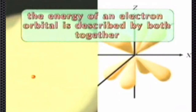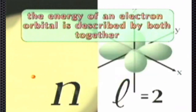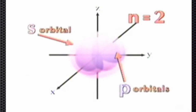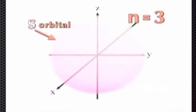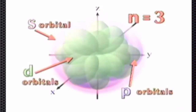The energy of an electron orbital is described by both the principal quantum number n and the second quantum number L together. As n increases, there is more than one orbital shape. For example, where n equals two, there are S and P shaped orbitals. S orbitals have lower energy than P orbitals and fill first. At n equals three, d orbitals with higher energies than P fill last.